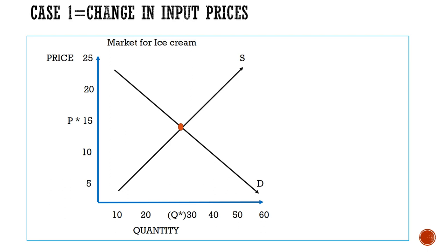We will analyze it via the market for ice creams. There are several inputs in the production of ice creams like sugar, milk, or cream. Suppose there is an increase in the price of sugar, which is an important resource. Every supplier has a limited budget, so if the price of any input rises, they have less budget to produce. Definitely they will decrease the supply, and the supply curve moves towards the left, depicting a decrease in supply.